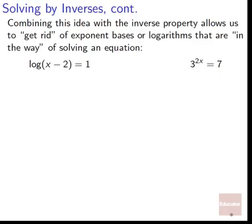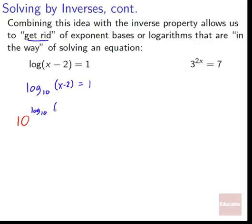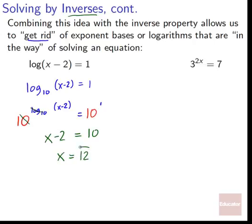Combining this with the inverse property lets us get rid of exponent bases or logarithms that are in the way. For example, if we've got log of x minus 2 equals 1 — that's log base 10 of x minus 2 equals 1 — we raise both sides with 10 as the base: 10 to the log base 10 of x minus 2 equals 10 to the 1. The log base 10 and the 10 cancel, leaving x minus 2 equals 10, so x equals 12.